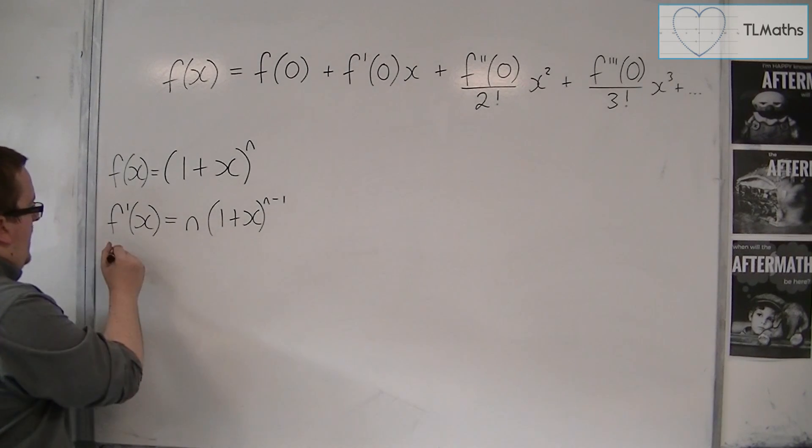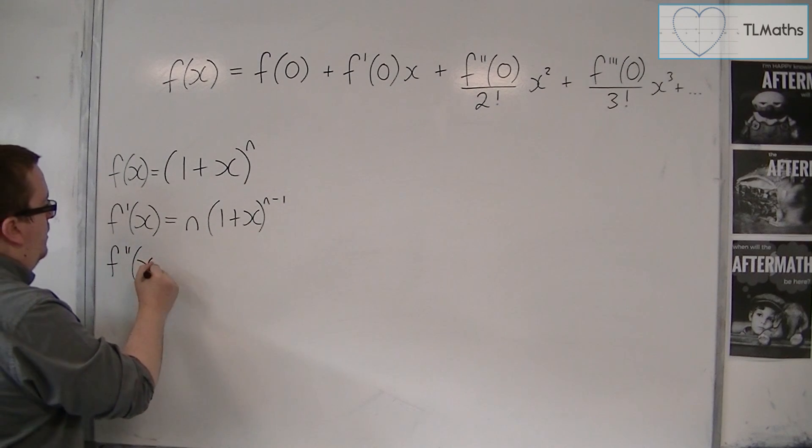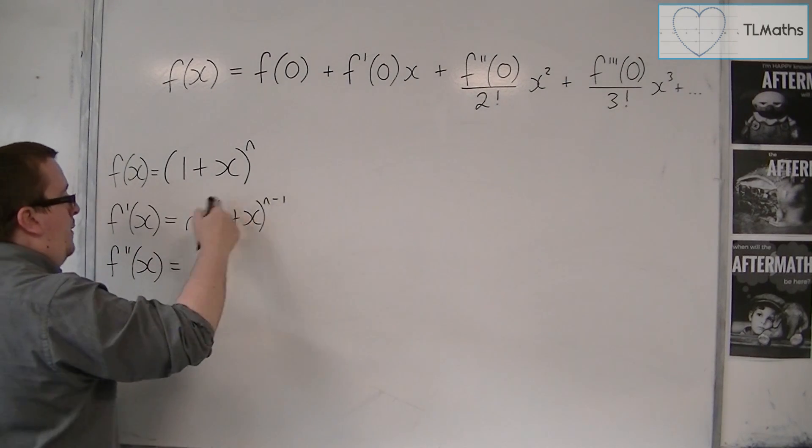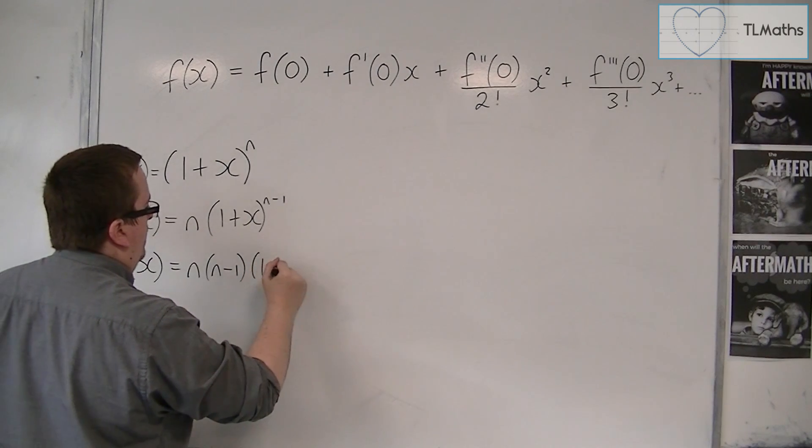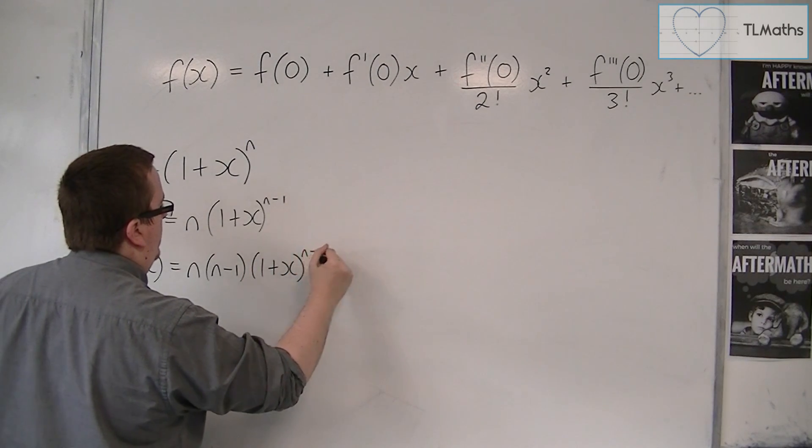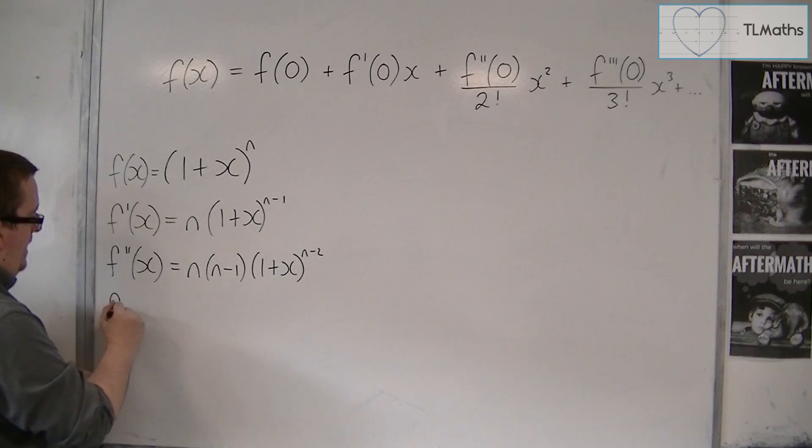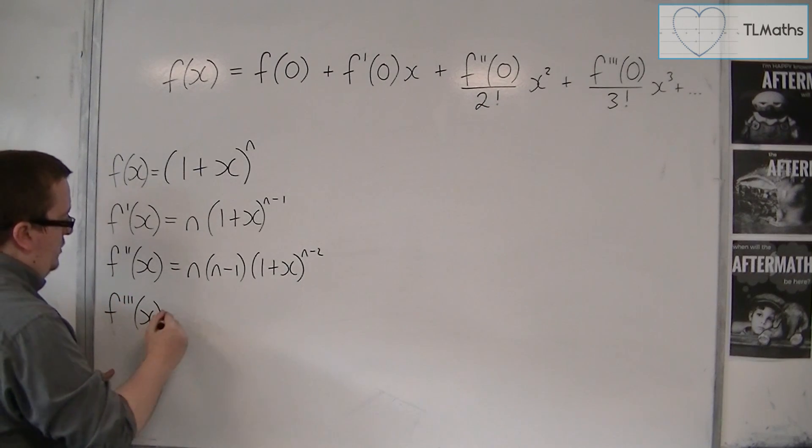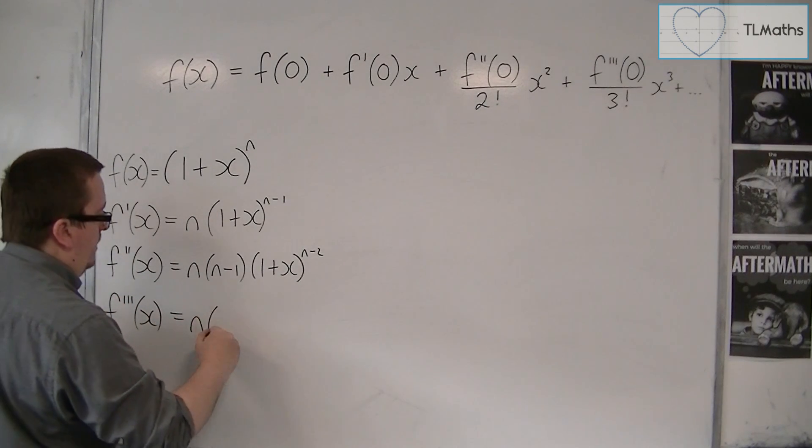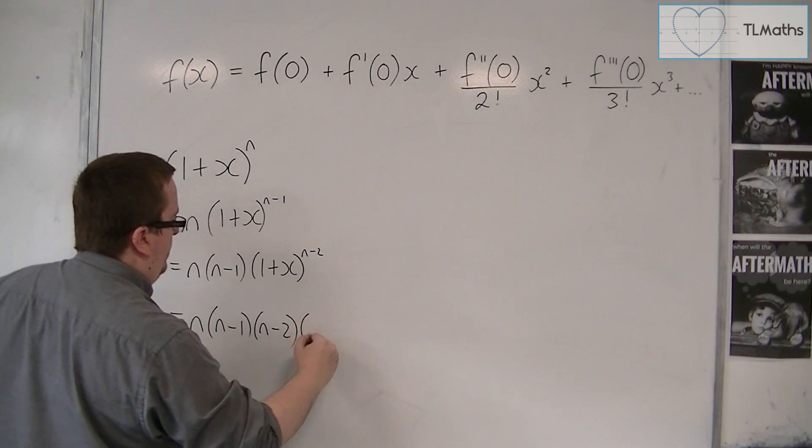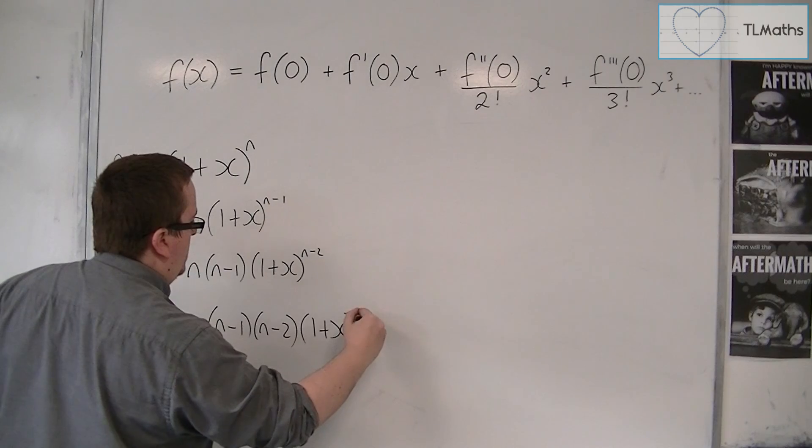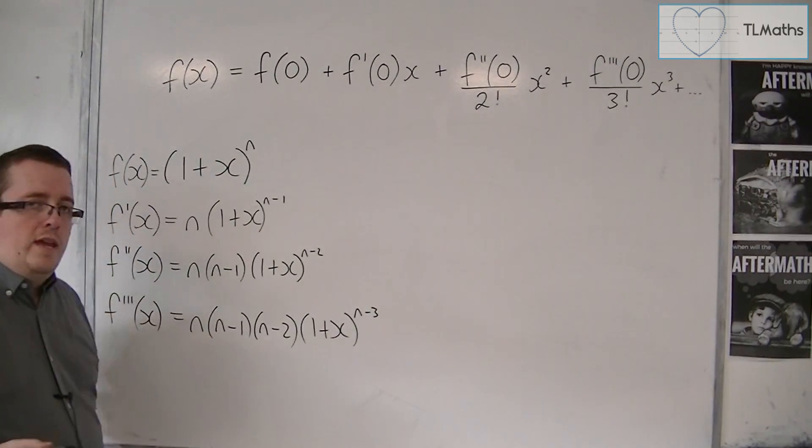And then f double prime of x. The power comes down to the front. So n, n minus 1, 1 plus x to the n minus 2. And then f, the third derivative, will be n times n minus 1. The power comes down to the front, n minus 2, 1 plus x to the n minus 3.